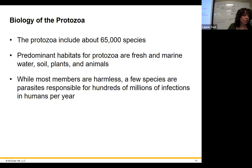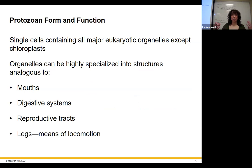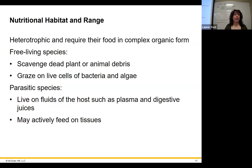Biology of protozoa — about 65,000 species, all single-celled (always unicellular). Most are harmless, but some cause infections. They can have organelles that look like actual organs — mouth parts, reproductive tracts, legs — but they're still just a single-cell organism. It's a pretty advanced cell. They're heterotrophic: some are free-living saprobes, some graze on bacteria and algae, and then there are the parasitic species.